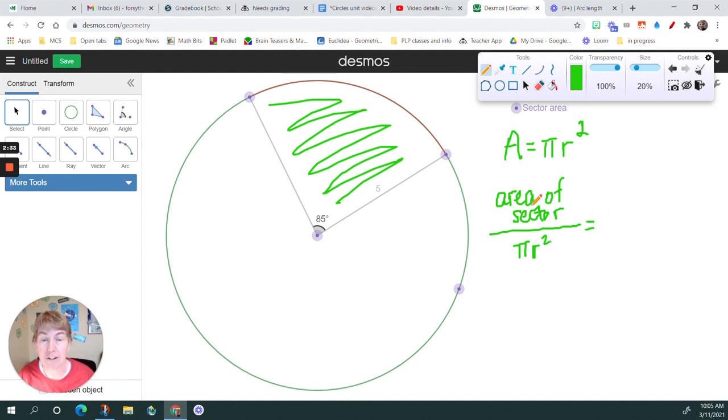So part of the area, the shaded part, over the whole area equals part of the degrees of the circle. In other words, the arc measure over the whole circle, which is of course 360 degrees.